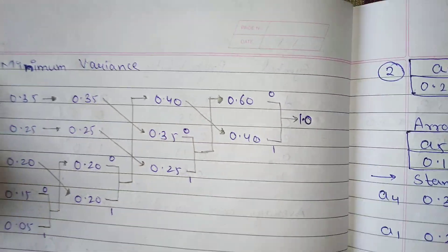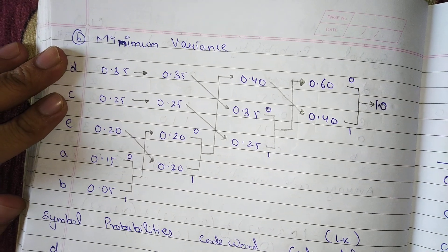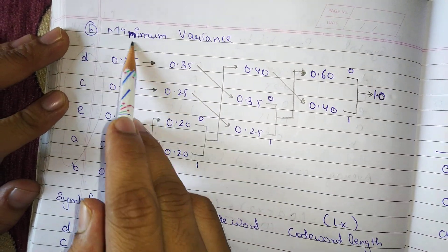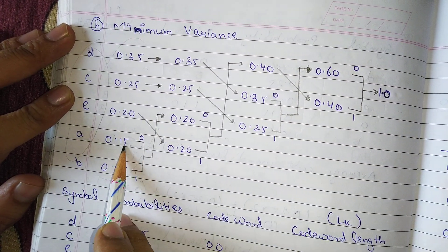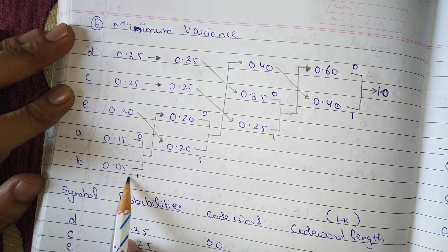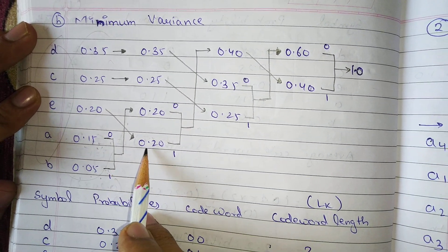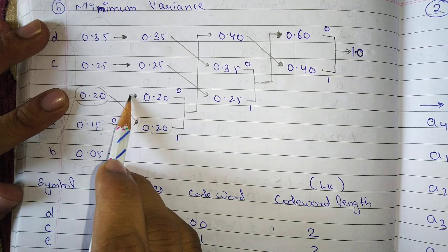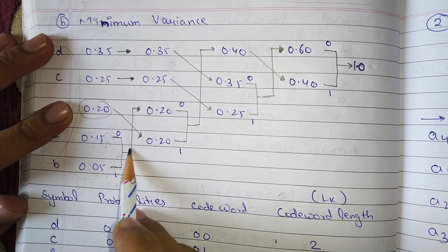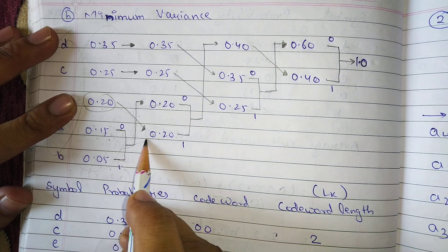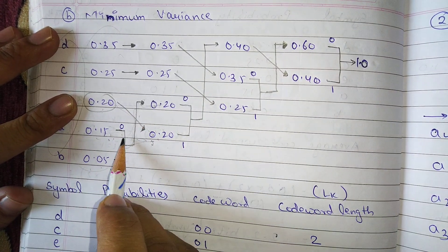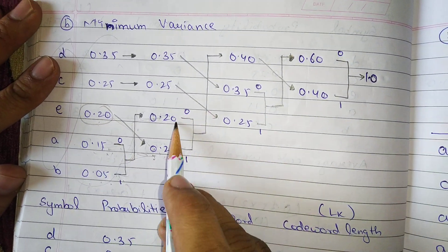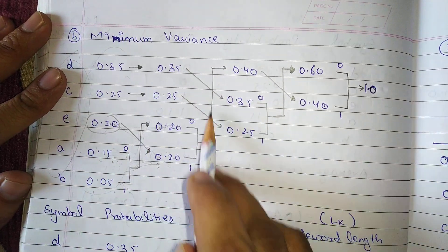Now we solve the same question using minimum variance Huffman coding. The only difference is that when we add the two smallest probabilities — 0.15 + 0.05 = 0.20 — this combined node does not go below the existing 0.20; instead it goes above it to its sorted position. The remaining values come down.